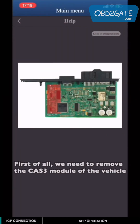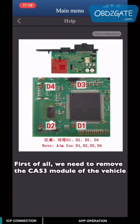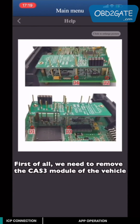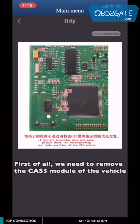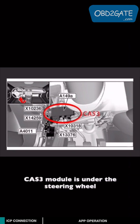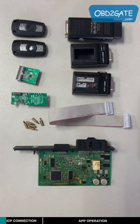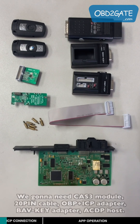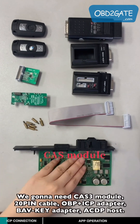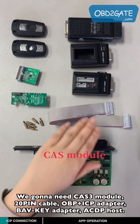First of all, we need to remove the CAS3 module from the vehicle. The CAS3 module is located under the steering wheel. We are going to need the CAS3 module,